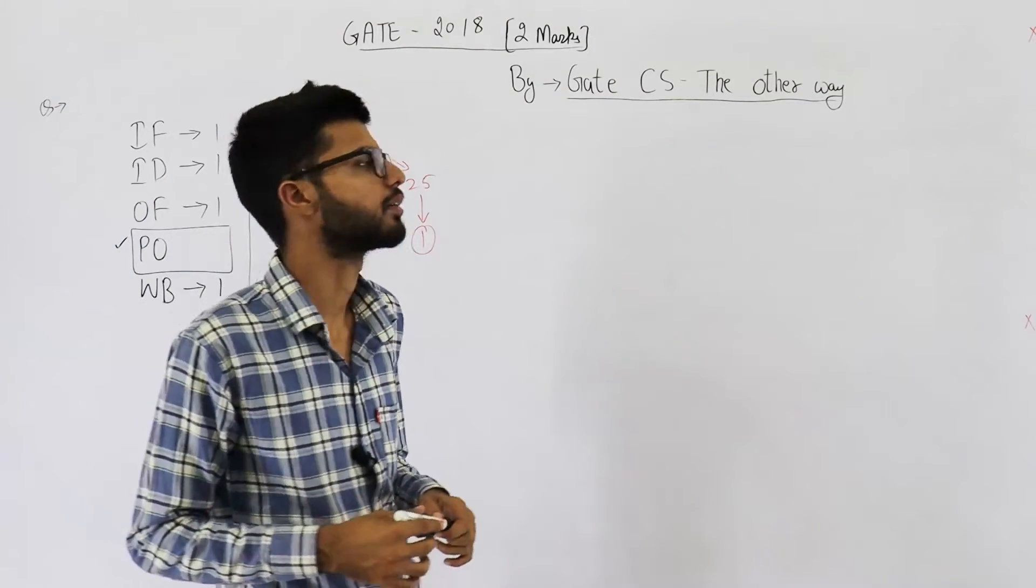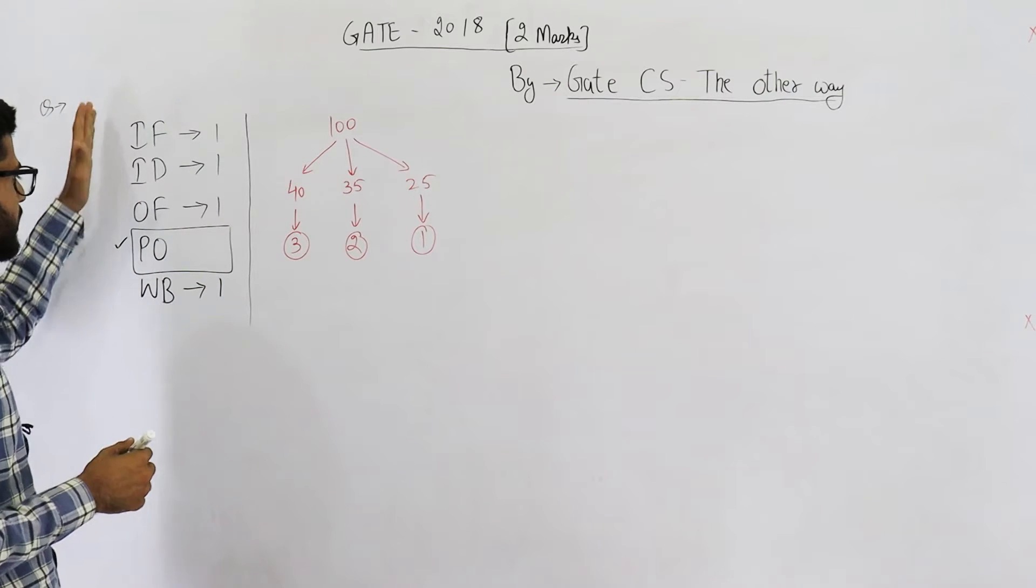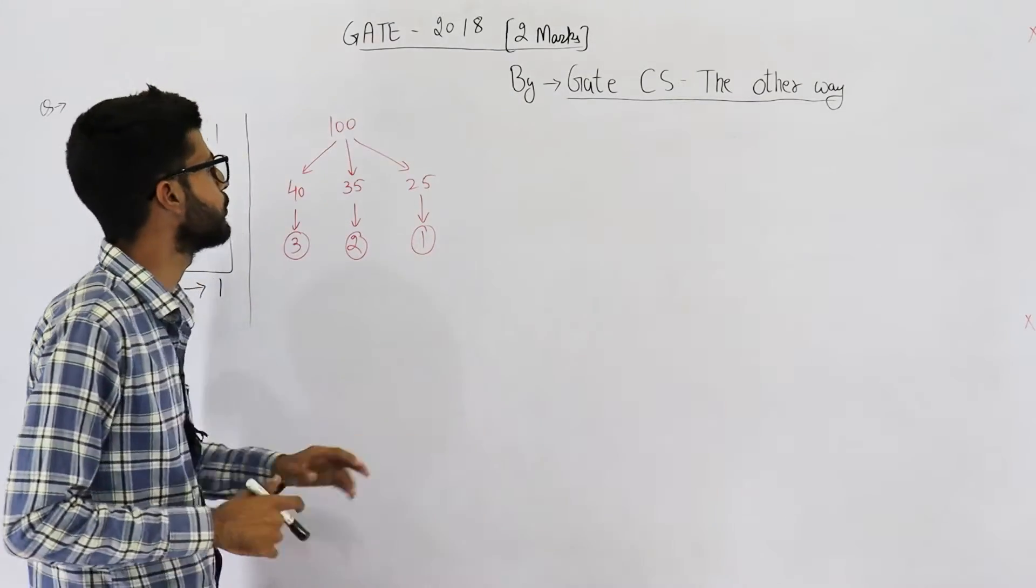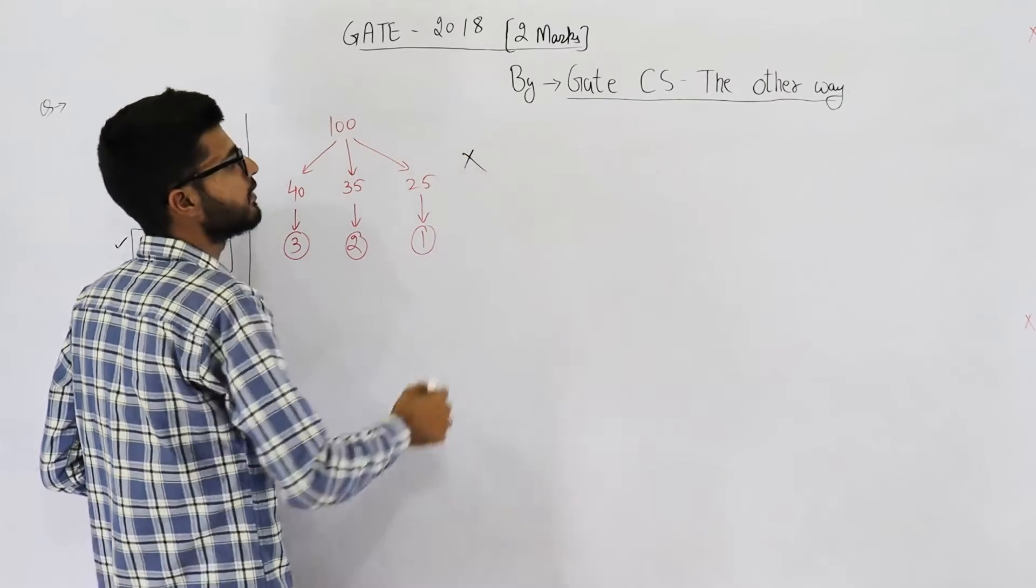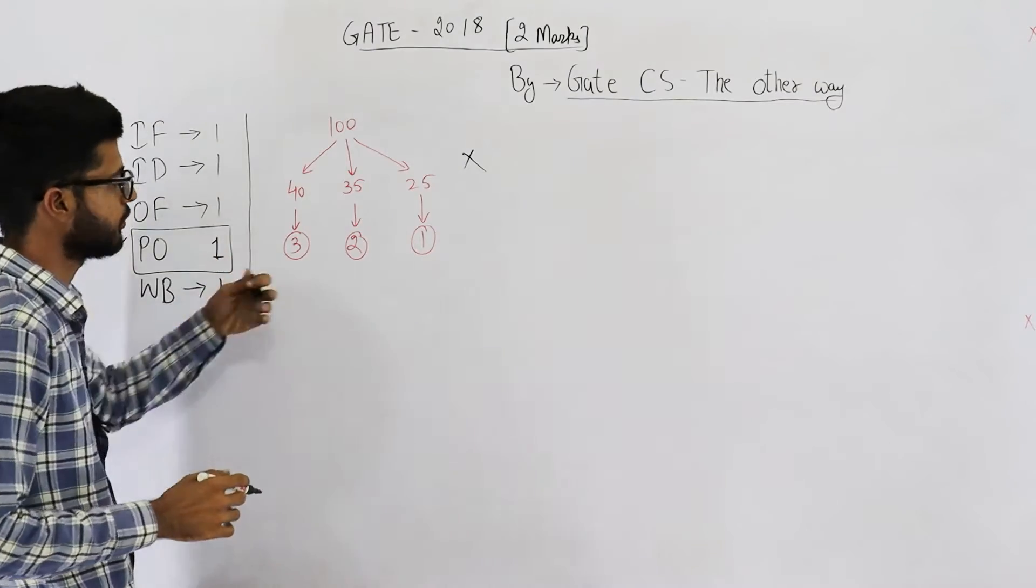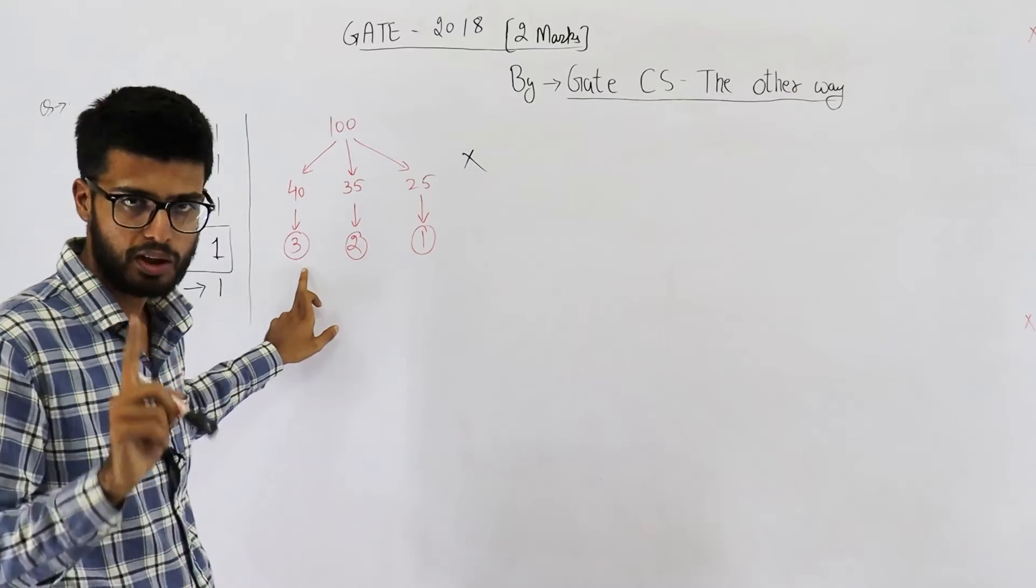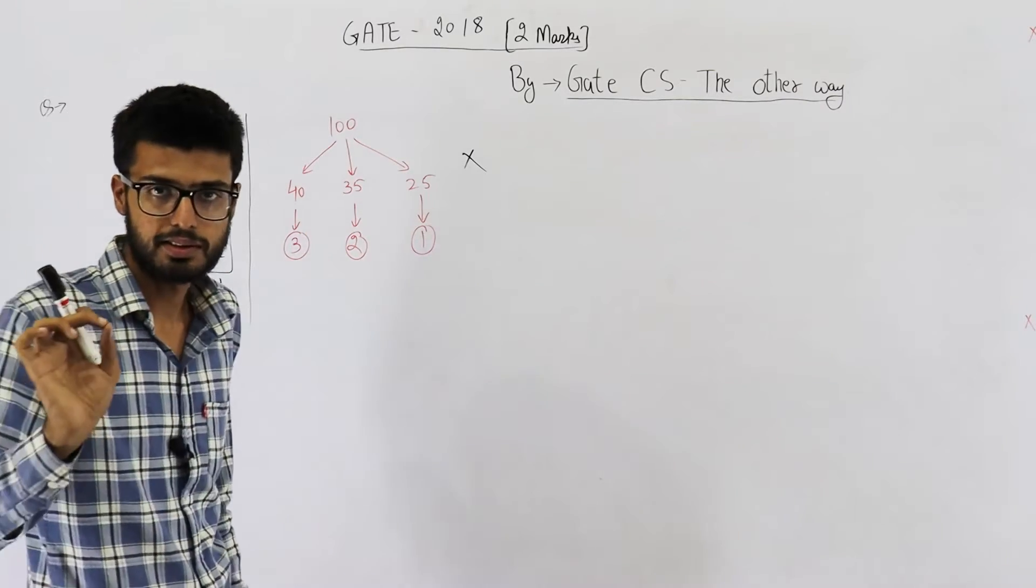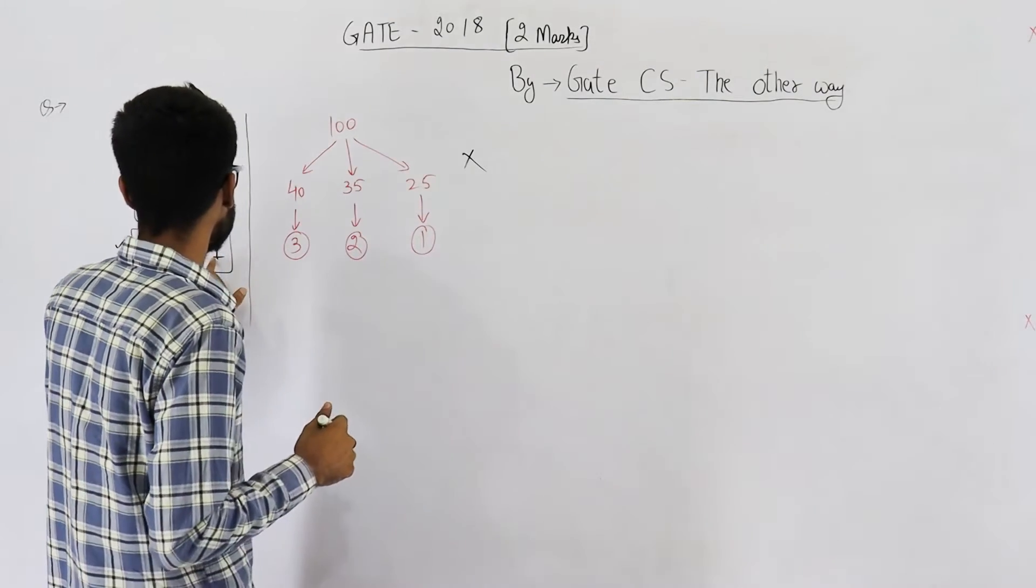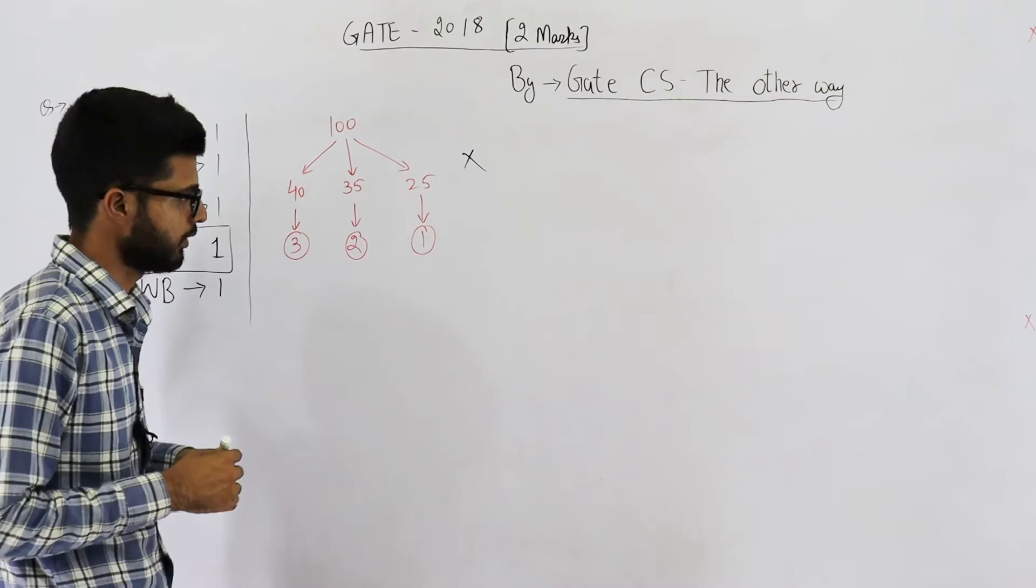That means our shortcut is applicable here. The shortcut that I taught you says that you assume that every stage requires 1 clock cycle. That means for the time being you neglect this information given in the question. You can simply neglect this and assume that PO stage also requires one clock cycle only for whatever kind of instruction it is. That means these instructions also take one clock cycle only for PO stage. That's just assumption. And then by making this assumption, you try to find number of clock cycles required to execute the entire program. Let's do that.